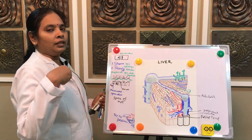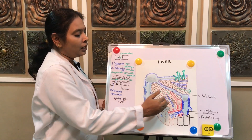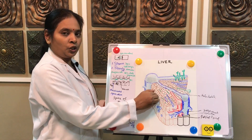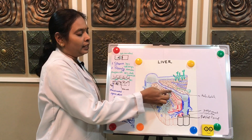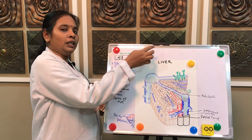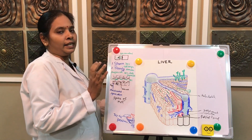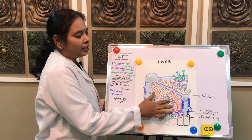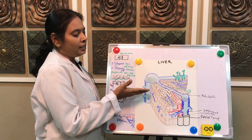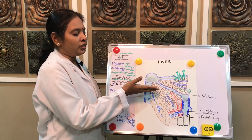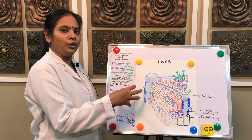Drugs, toxins, and alcohol are processed through the sinusoids and hepatocytes. Some drugs or chemicals are released along with the bile and enter the bile canaliculi and then the bile duct. The liver's secretory output goes through the hepatic duct.